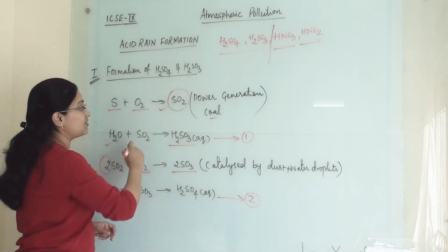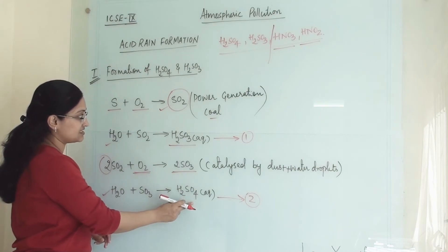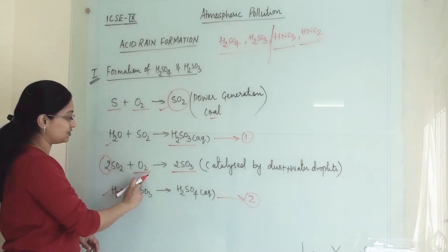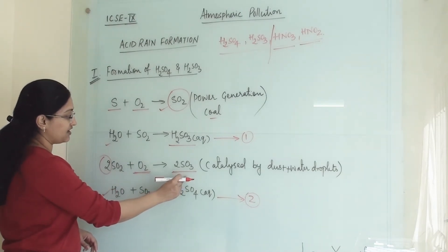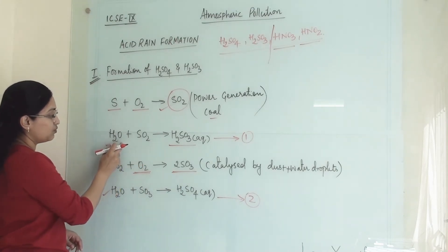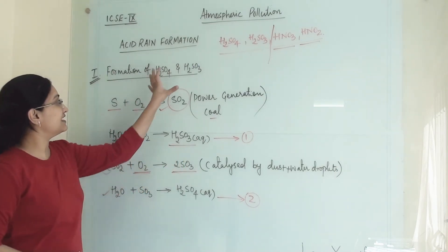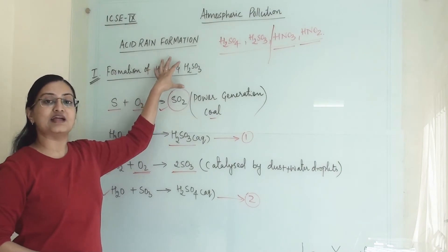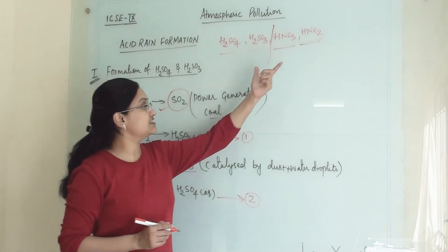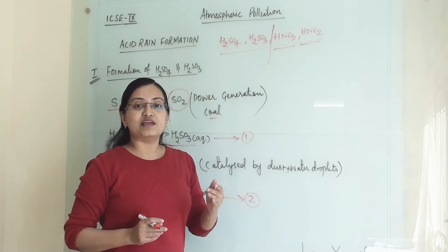So sulfur dioxide alone is able to form both sulfurous acid and sulfuric acid. The only difference is that when two molecules of sulfur dioxide react with oxygen, sulfur trioxide is formed, which then reacts with water to give sulfuric acid. When sulfur dioxide reacts directly with water, it gives sulfurous acid. This is how we get traces of both sulfurous acid and sulfuric acid in our atmosphere.